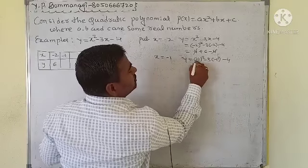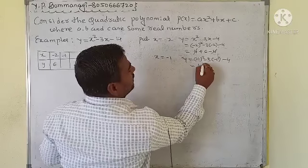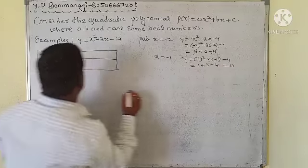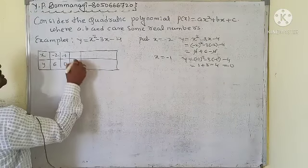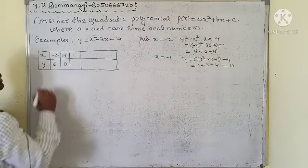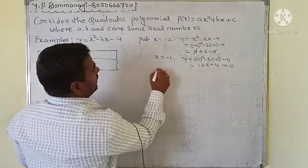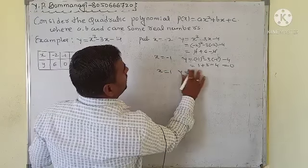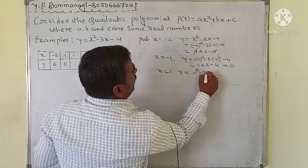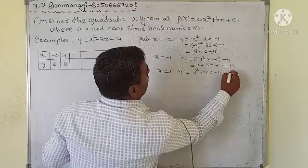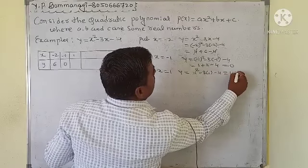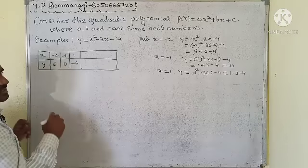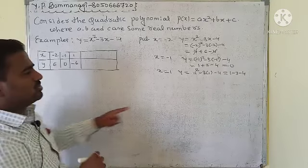When x = -1: y = (-1)² - 3(-1) - 4 = 1 + 3 - 4 = 0. When x = 1: y = 1² - 3(1) - 4 = 1 - 3 - 4 = -6.